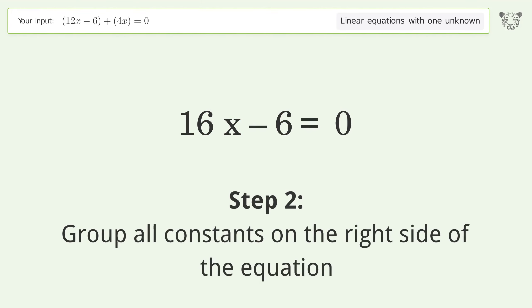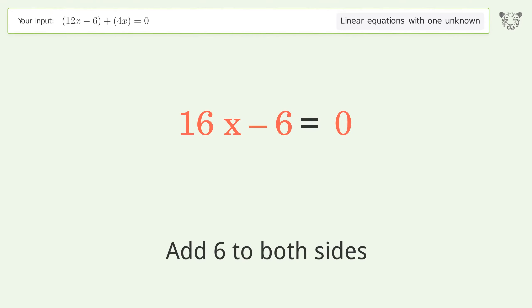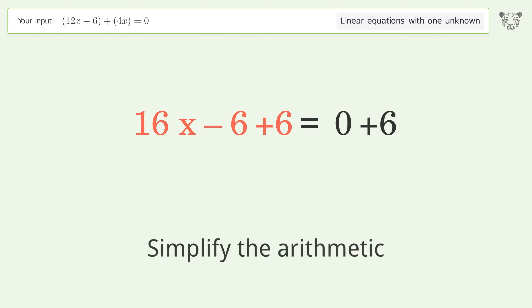Group all constants on the right side of the equation. Add 6 to both sides. Simplify the arithmetic.